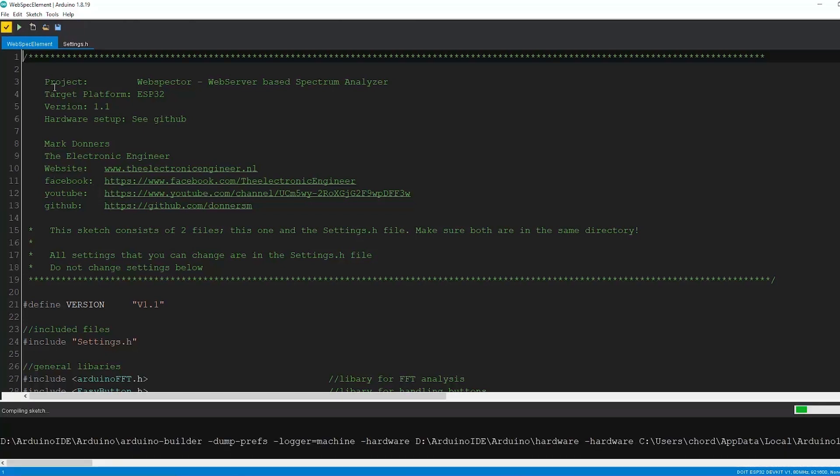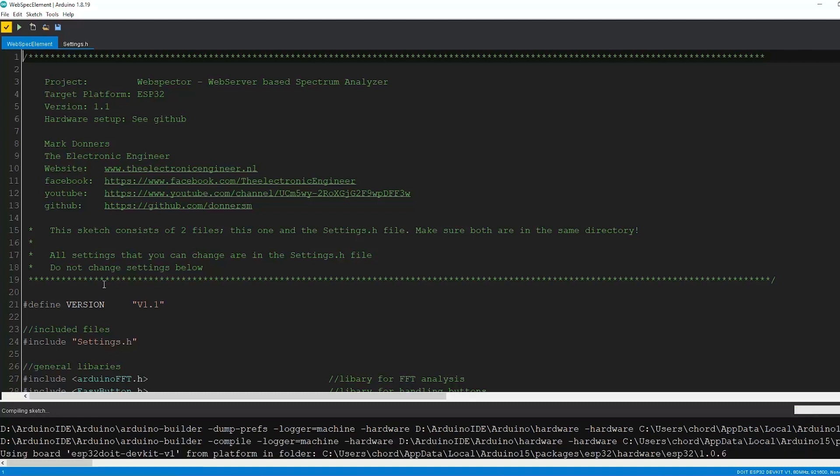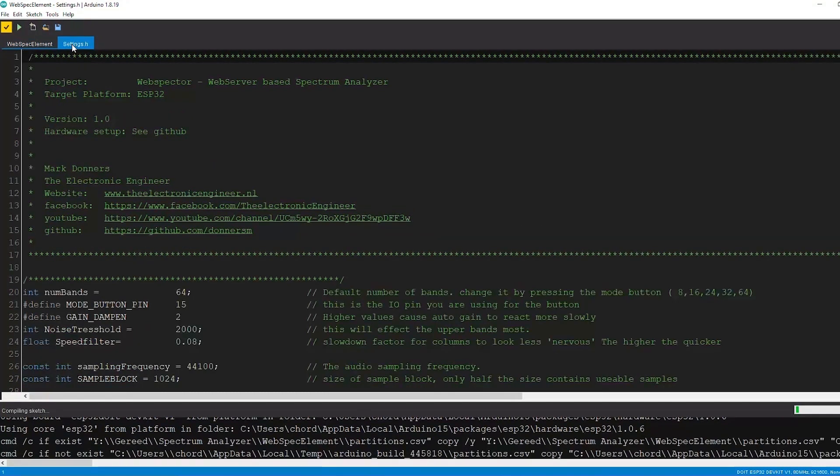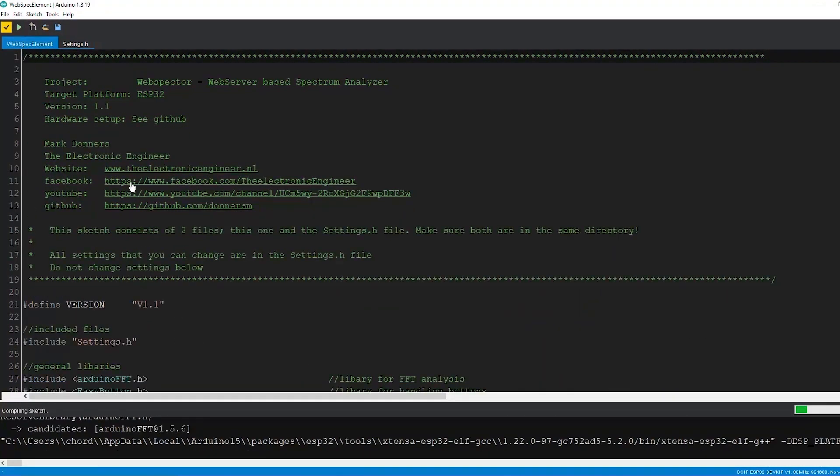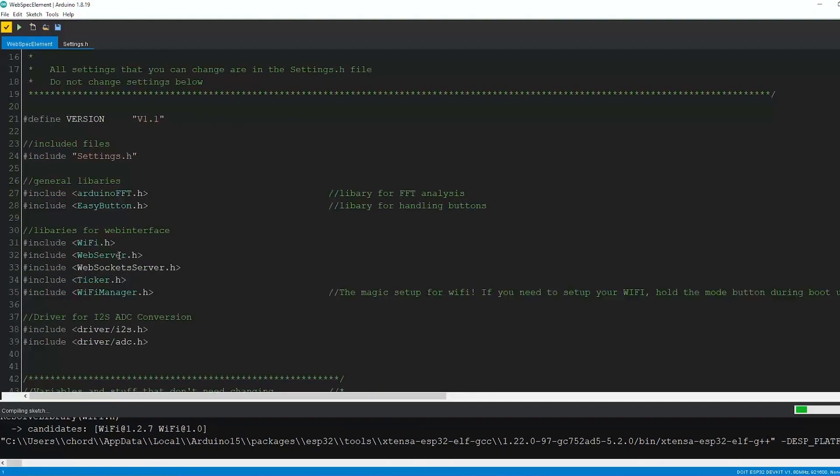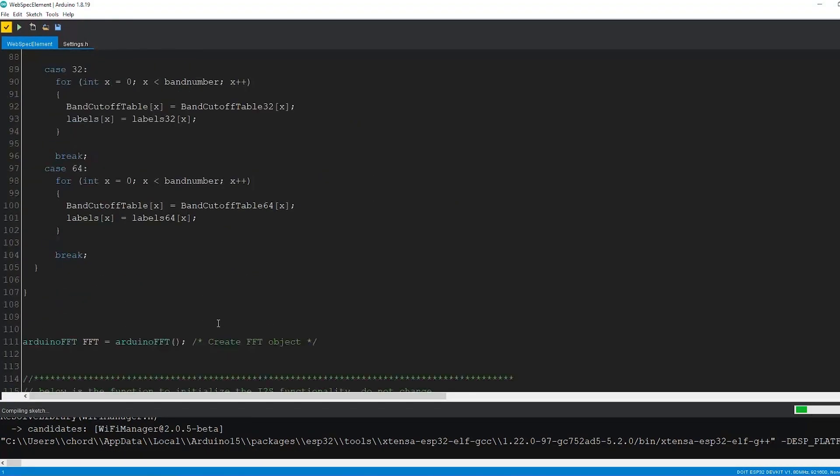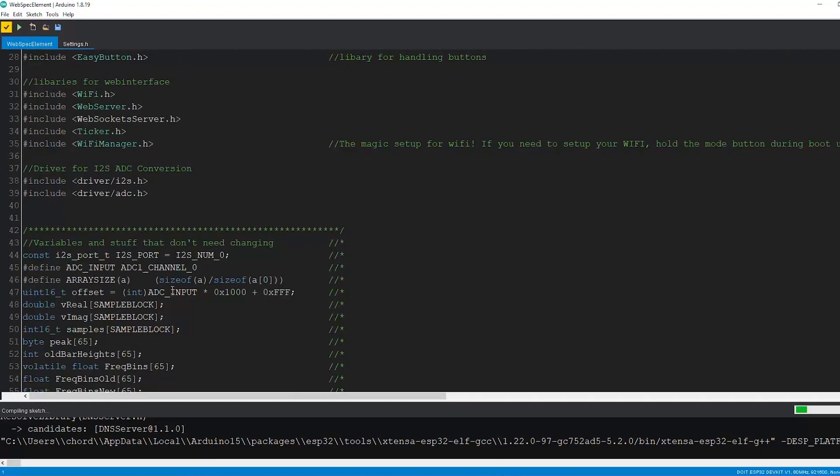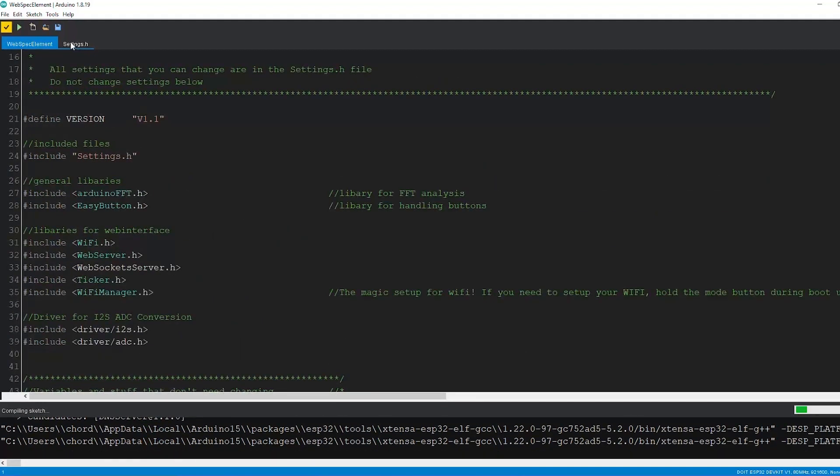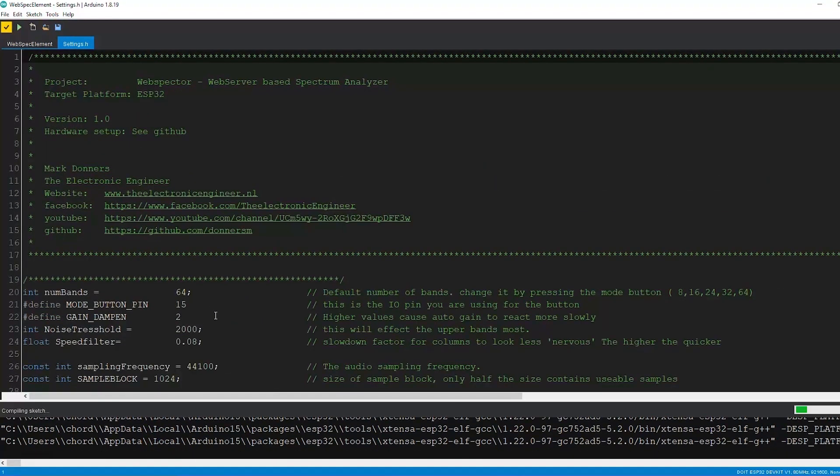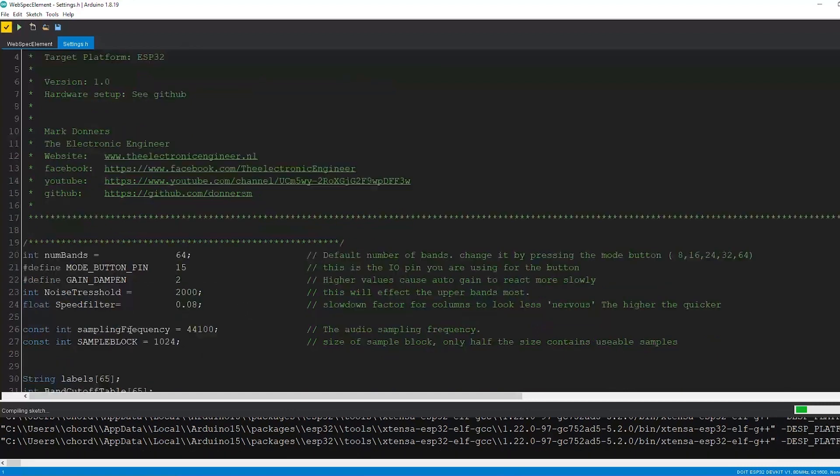We can already press compile while I talk you through it. Basically the sketch is made of two files, it's our webspec element, the main file, and our settings. Let's take a look at the webspec element first. Basically there's nothing in this file that needs changing unless you want to add functionality or you want to make some changes that have quite some impact. But basically you don't need to change it. Of course you can if you want to.